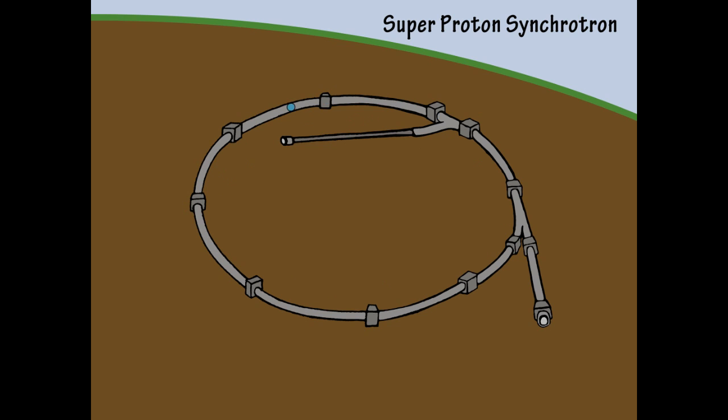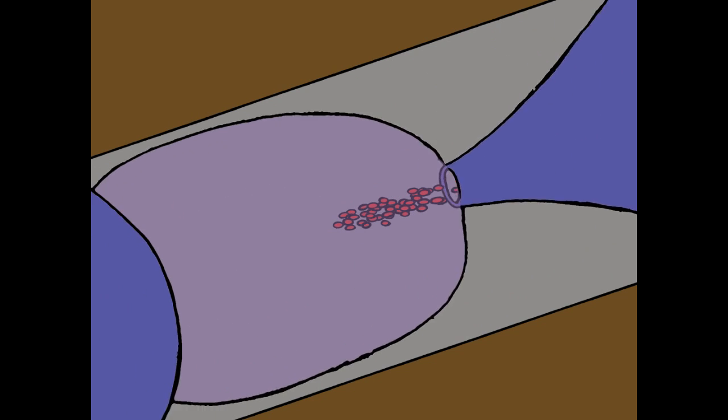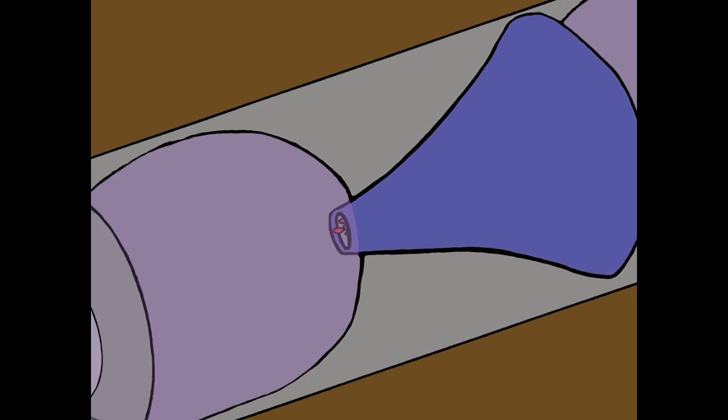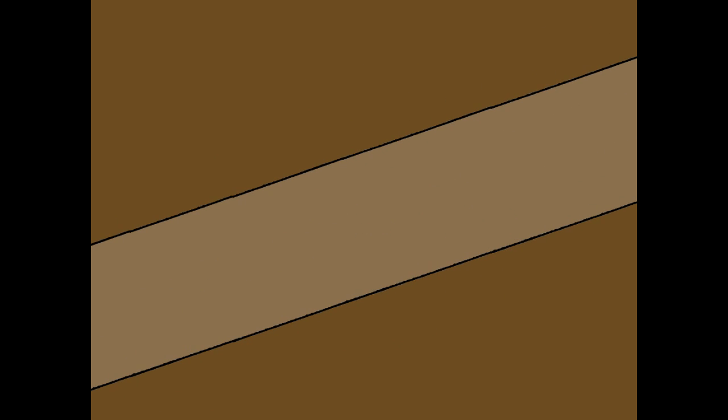After the protons have been accelerated enough, they are magnetically kicked from the circular part and are slammed into a graphite target, which is 2 meters long. From this proton crash, mesons are created, which are immediately focused by passing through magnetic horns and helium bags. The mesons are sent into a 995 meter long vacuum tunnel, where they transform into neutrinos.